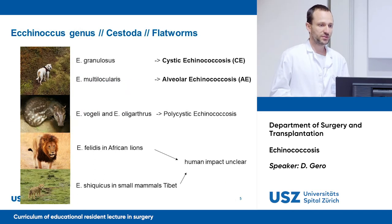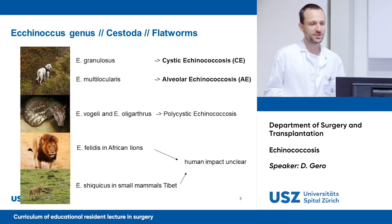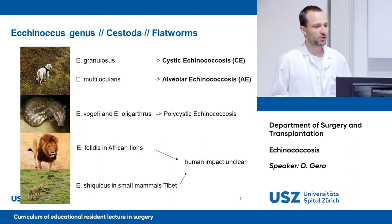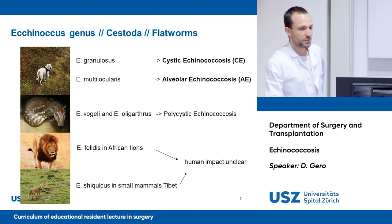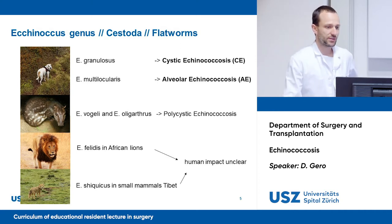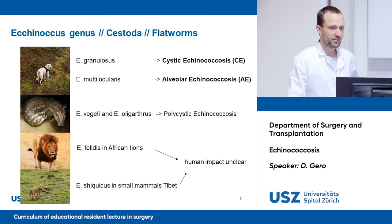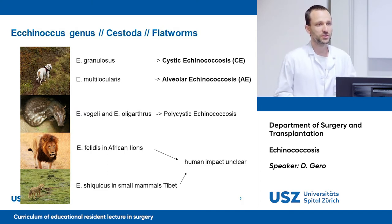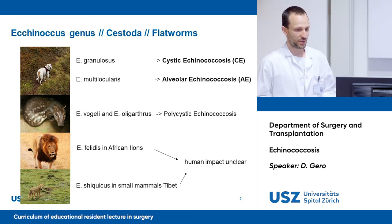Echinococcus genus belongs to the class of Cestoda, which are commonly called flatworms. The two most important pathogens are Echinococcus granulosus, which leads to cystic echinococcosis, and Echinococcus multilocularis, which leads to alveolar echinococcosis.